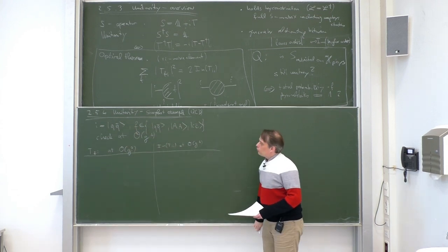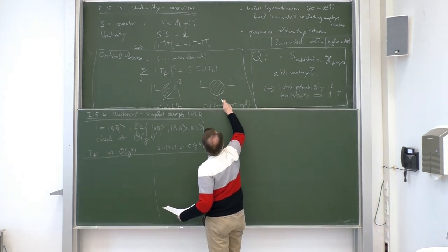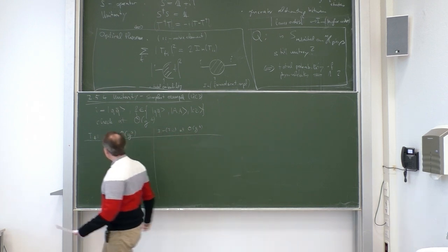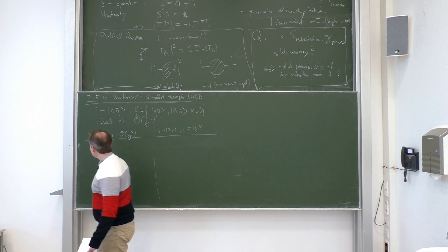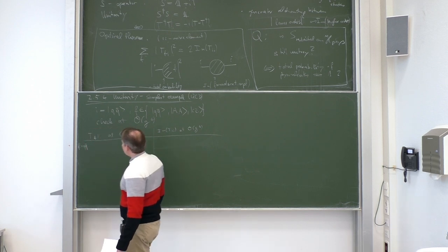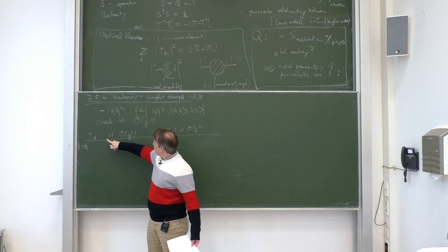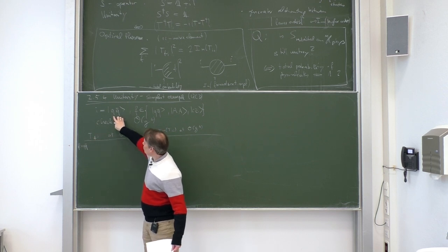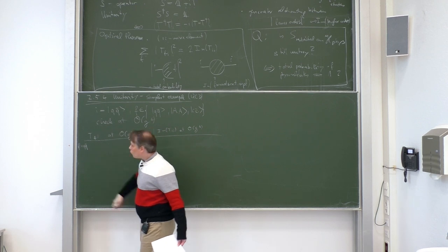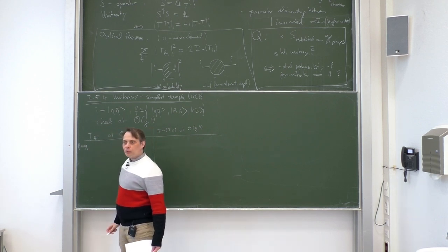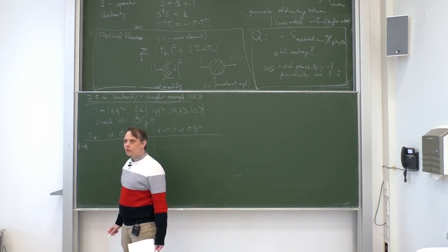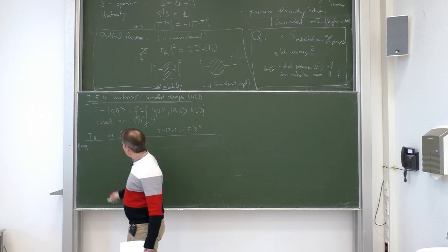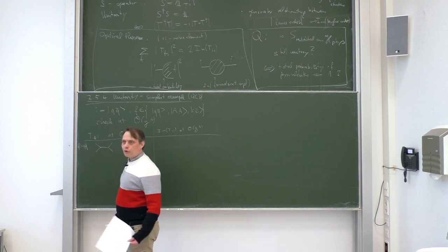Let us fill the table. What are the Feynman diagrams for T_fi? They can be grouped according to the final states. For the final state QQ-bar we need the scattering matrix element for QQ-bar → QQ-bar at second order in the coupling. At order g², there is a very simple s-channel Feynman diagram.